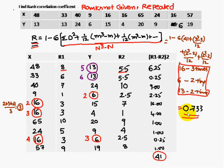A rank correlation coefficient of 0.733 indicates a positive correlation exists between X and Y. Thank you.